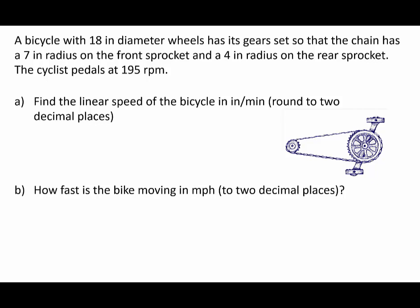A bicycle with 18 inch diameter wheels has its gears set so that the chain has a 7 inch radius on the front sprocket and a 4 inch radius on the rear sprocket. The cyclist pedals at 195 RPM, which is revolutions per minute.